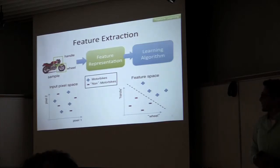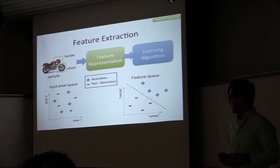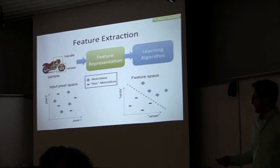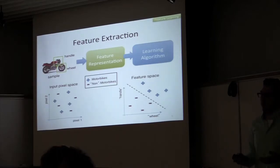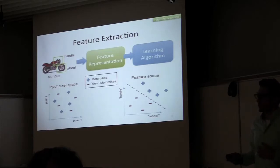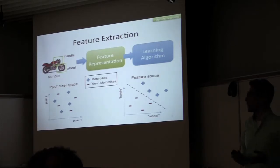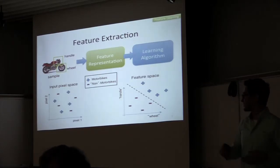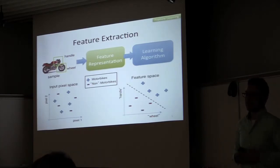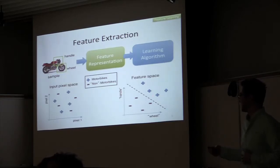The next step is feature extraction, which is very important. Here's a toy example showing why. If we'd like to classify whether a sample image has a motorcycle in it or not, looking at two raw pixel values across different samples shows that pixel information doesn't really provide any discriminative power. However, once we extract features — for example, a shape detector looking for round objects like wheels and another looking for linear objects like handles — we can transform the image into a space where samples are much easier to discriminate between and we can generate a decision boundary between those two classes.